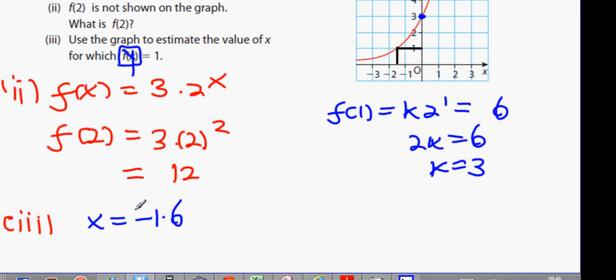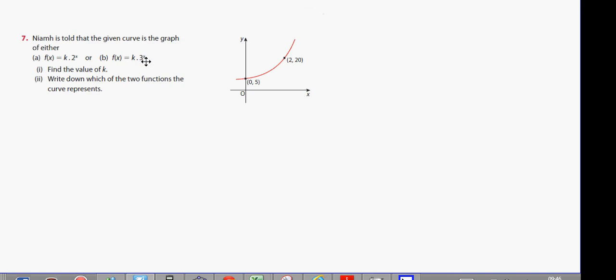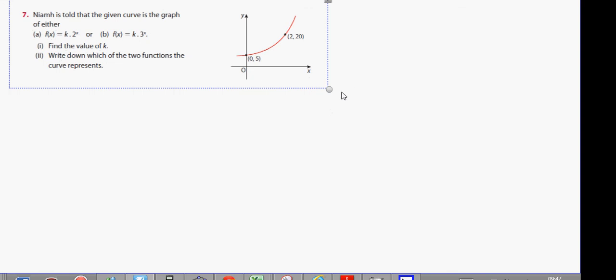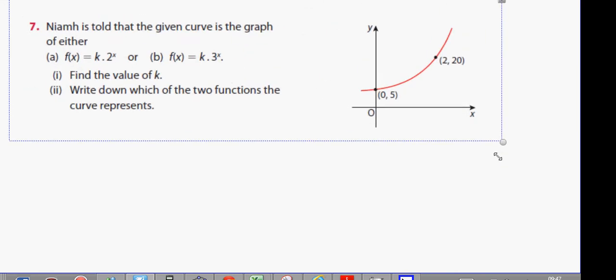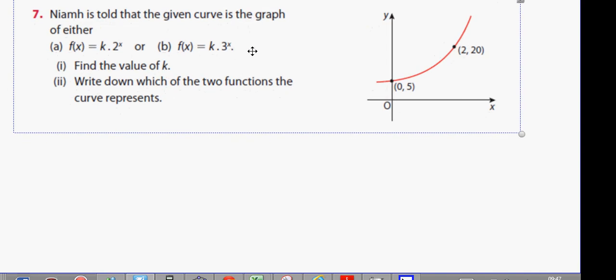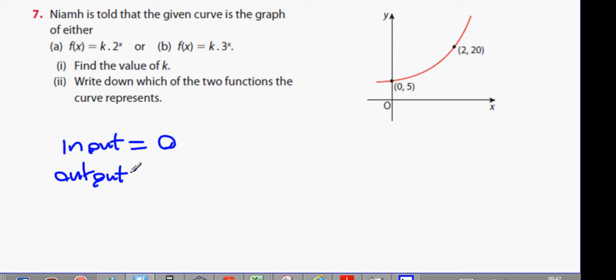All right, guys. Next question. Niamh was told that the given curve is the graph of either k times 2 to the power of x or k times 3 to the power of x. Find the value of k. Okay, this is an interesting question. When the input is 0, the output is 5. When input is 2, output is, anybody? 20.